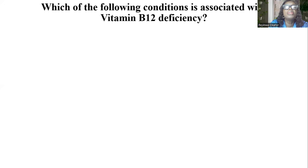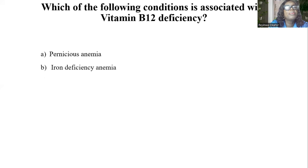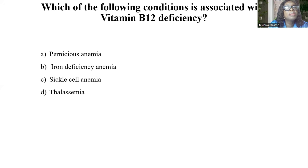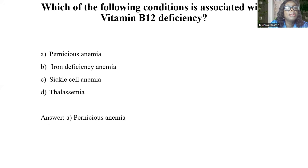Which of the following conditions is associated with B12 deficiency? A, pernicious anemia. B, iron deficiency anemia. C, sickle cell anemia. D, thalassemia. The answer is A, pernicious anemia.